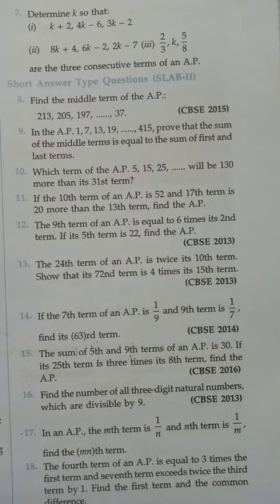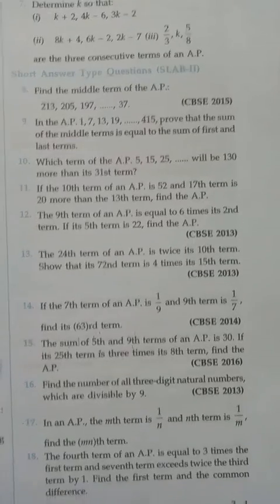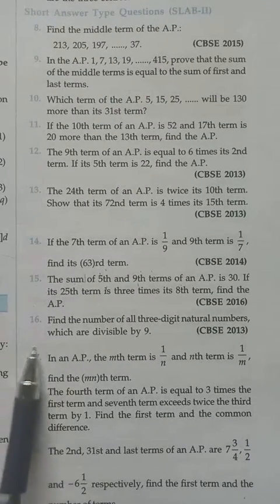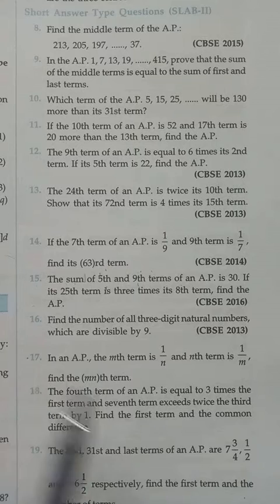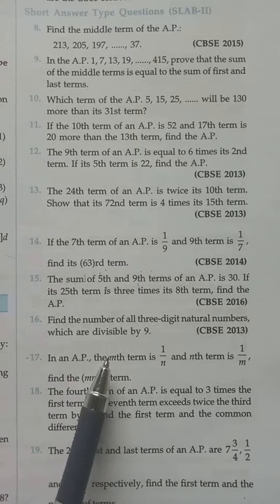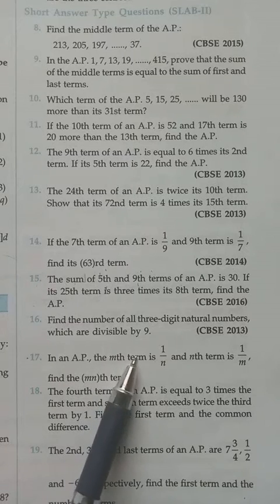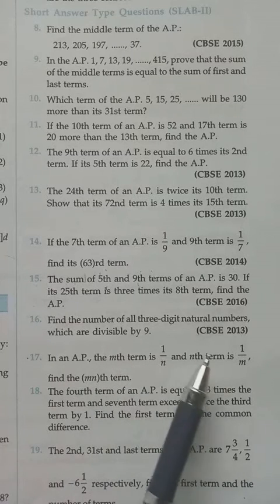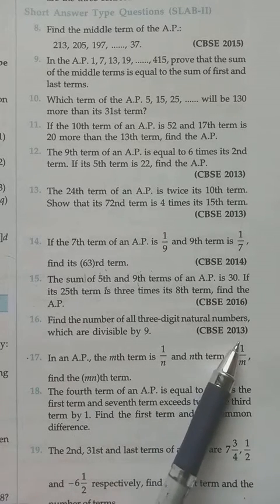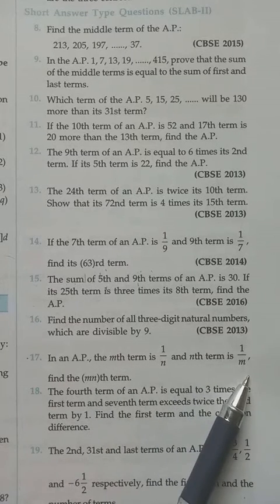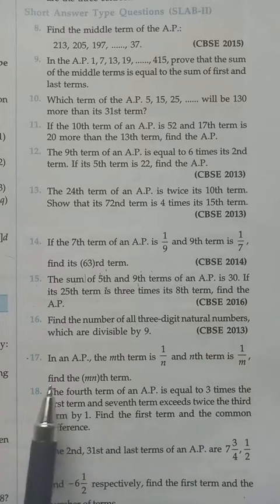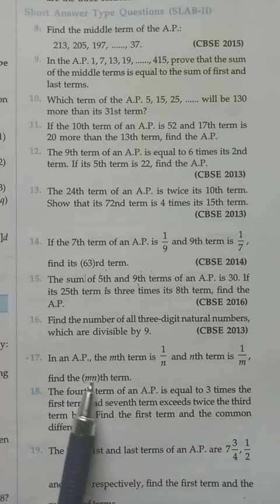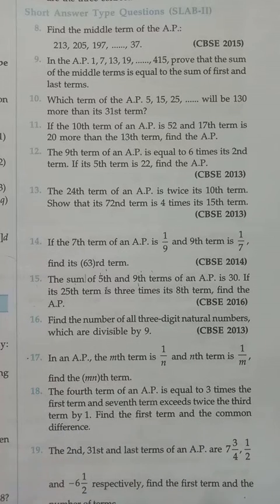Exercise 5C, Chapter 5, Arithmetic Progression. We continue with question number 17. We have the mth term equal to 1/n and the nth term equal to 1/m, and we have to find the mnth term.